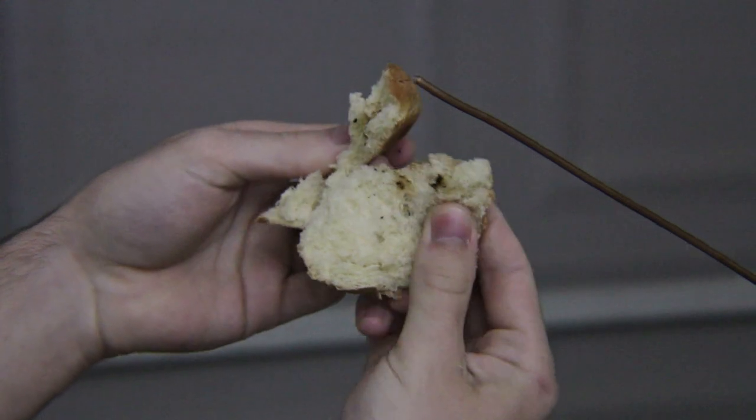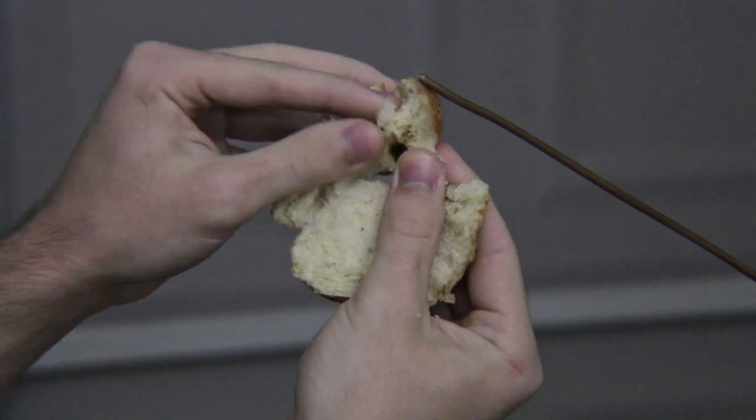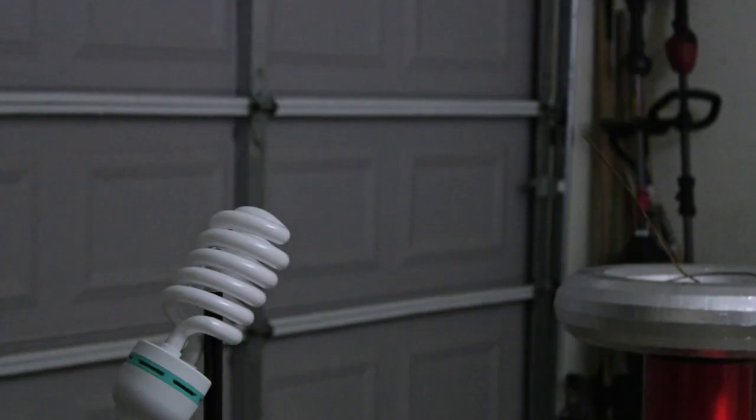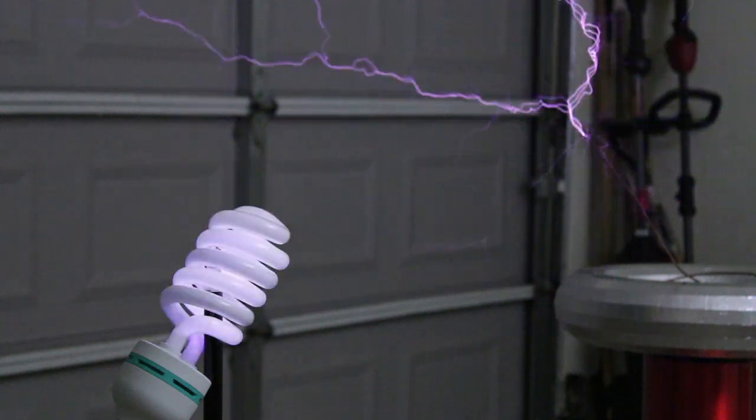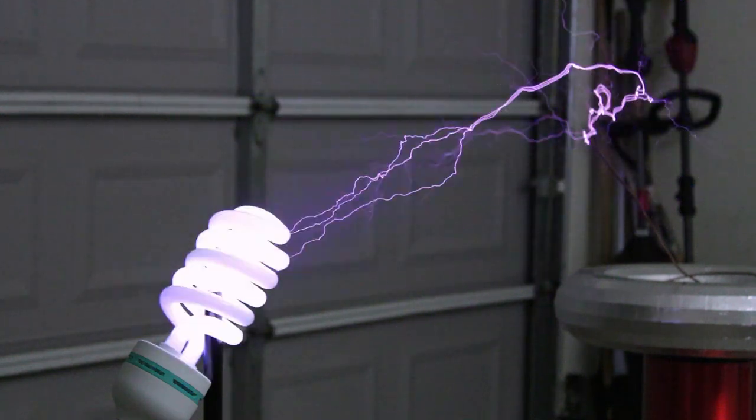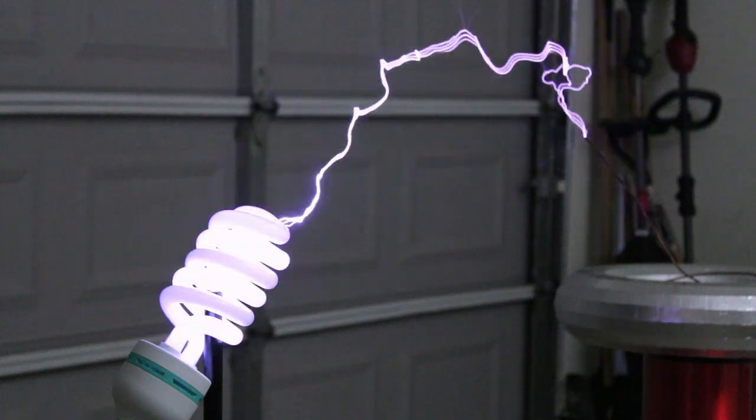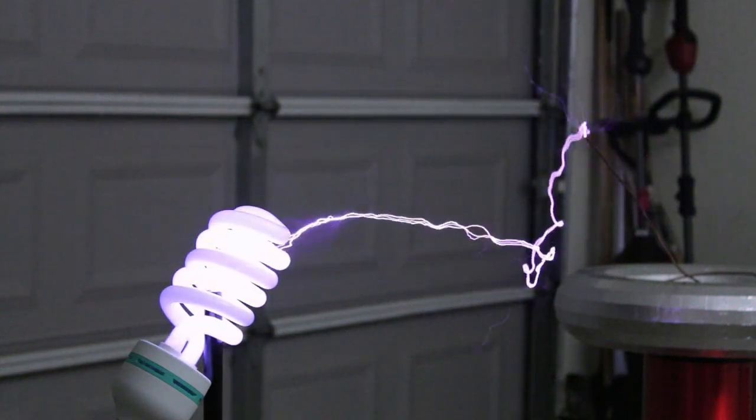Maybe I should try using this thing as Nikola Tesla intended, to wirelessly power common objects. Here, I have a fluorescent lightbulb. Let's see how well it holds up to 10,000 times its rated voltage. Alright, so it definitely lights up, but I wouldn't exactly call this an effective means of distributing power.